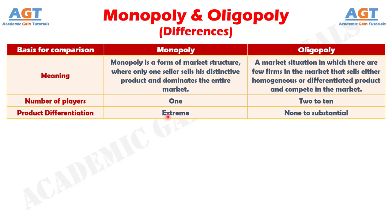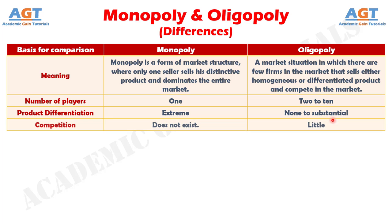Product differentiation is extreme in a Monopoly, whereas there is none to substantial product differentiation in Oligopoly. No. 4: In Monopoly, as there is a sole seller of a product or provider of service, the competition does not exist at all. On the other hand, in Oligopoly, a slight competition is there among the firms.